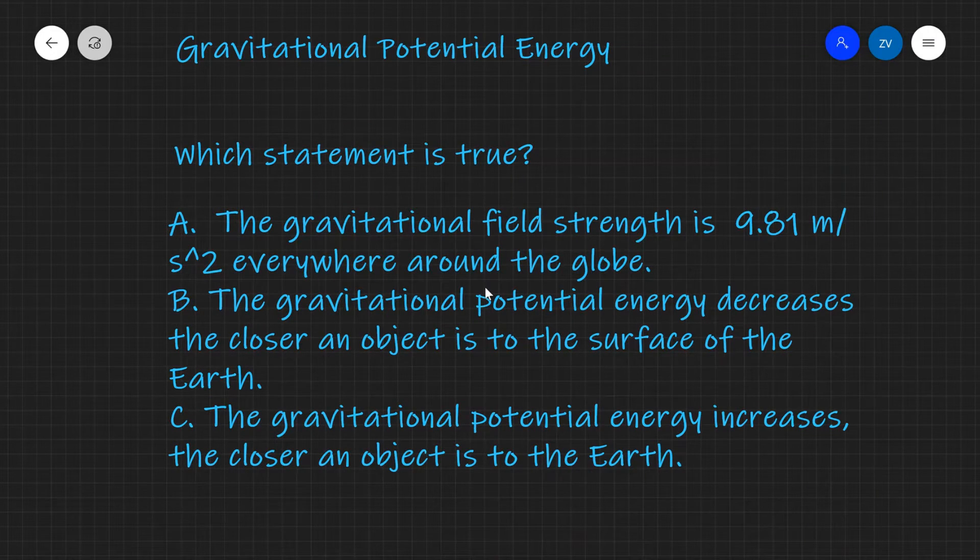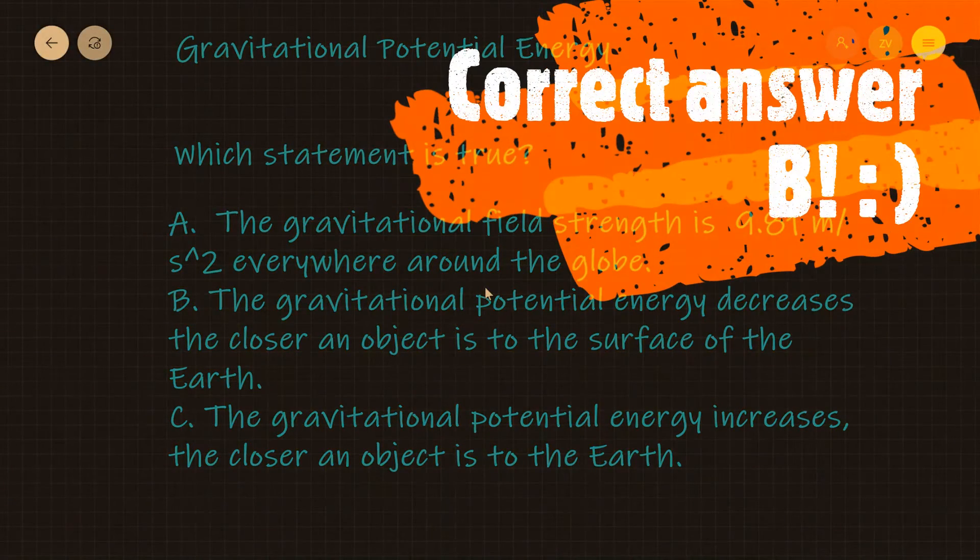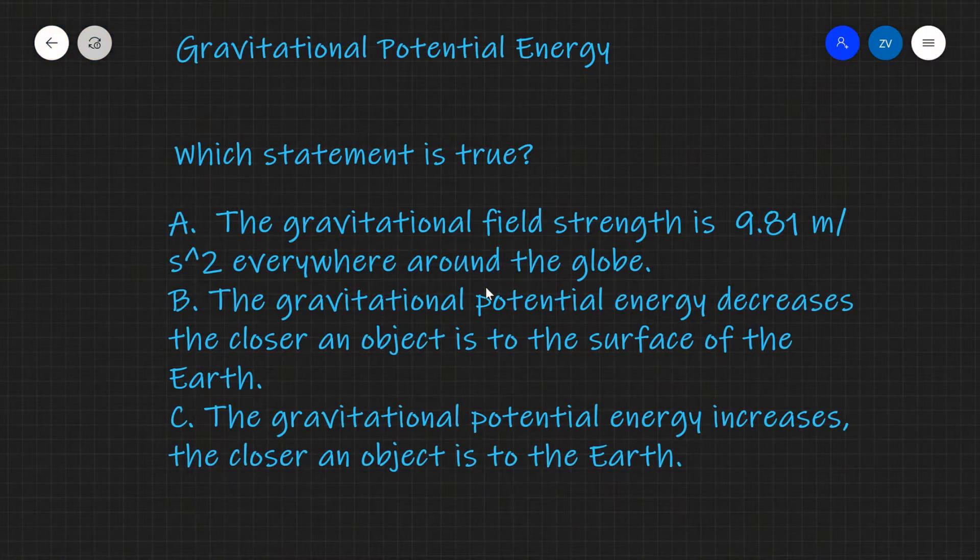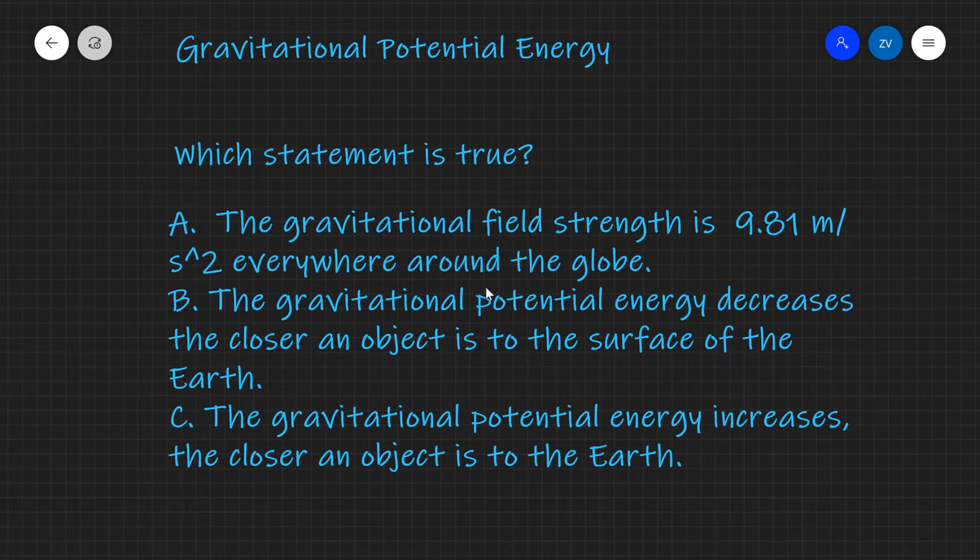And the correct answer is B. The gravitational potential energy decreases the closer an object is to the surface of the Earth.